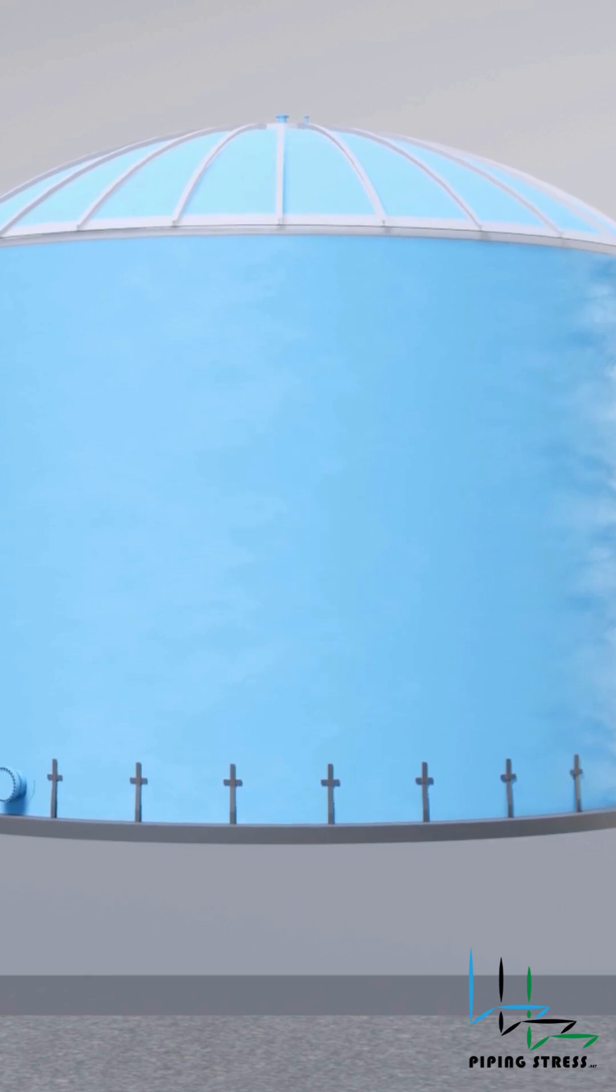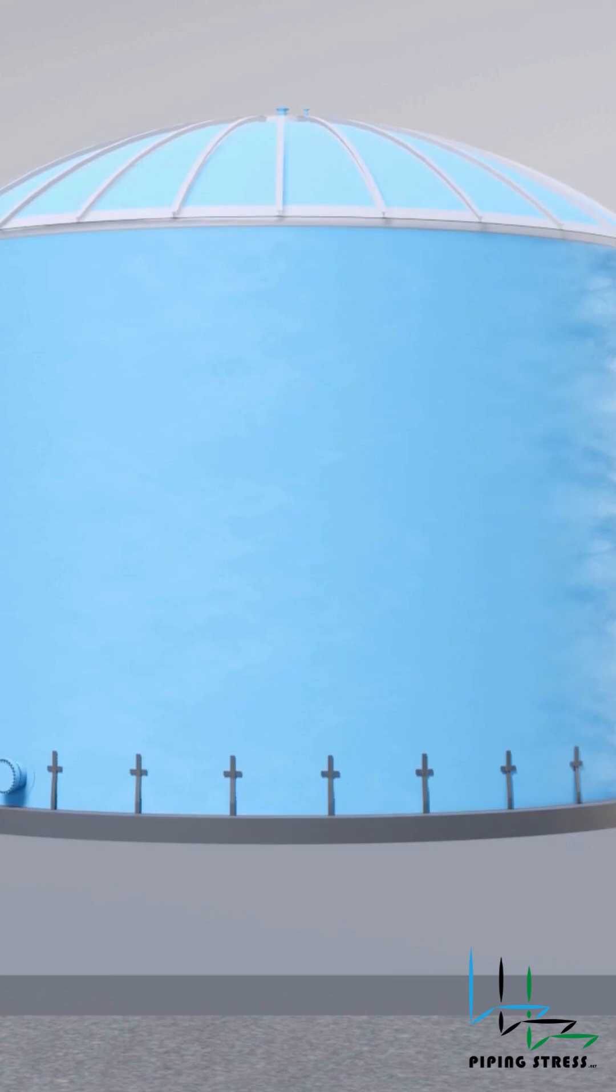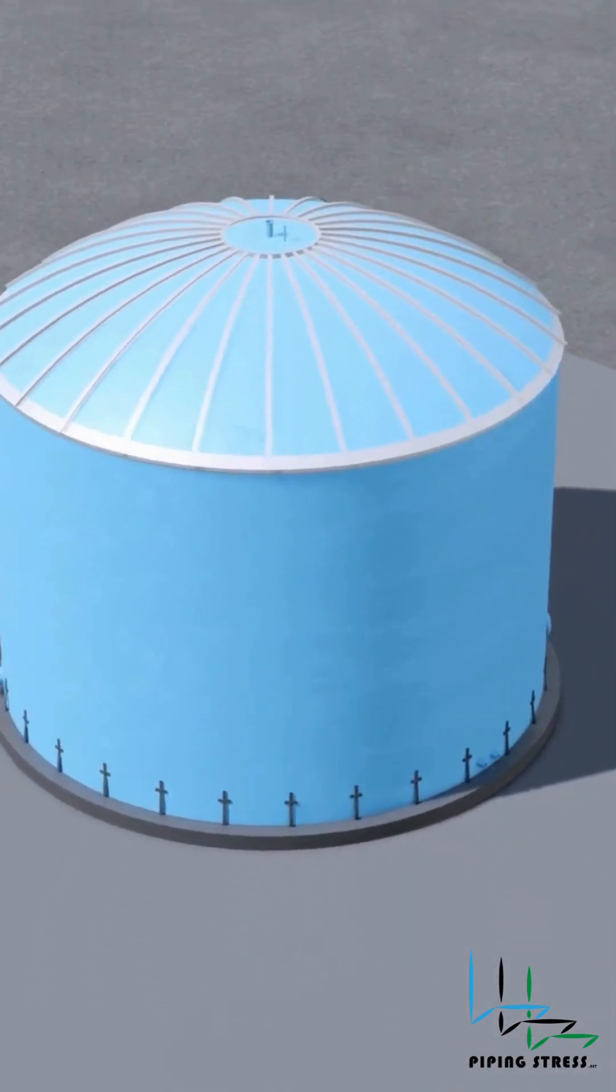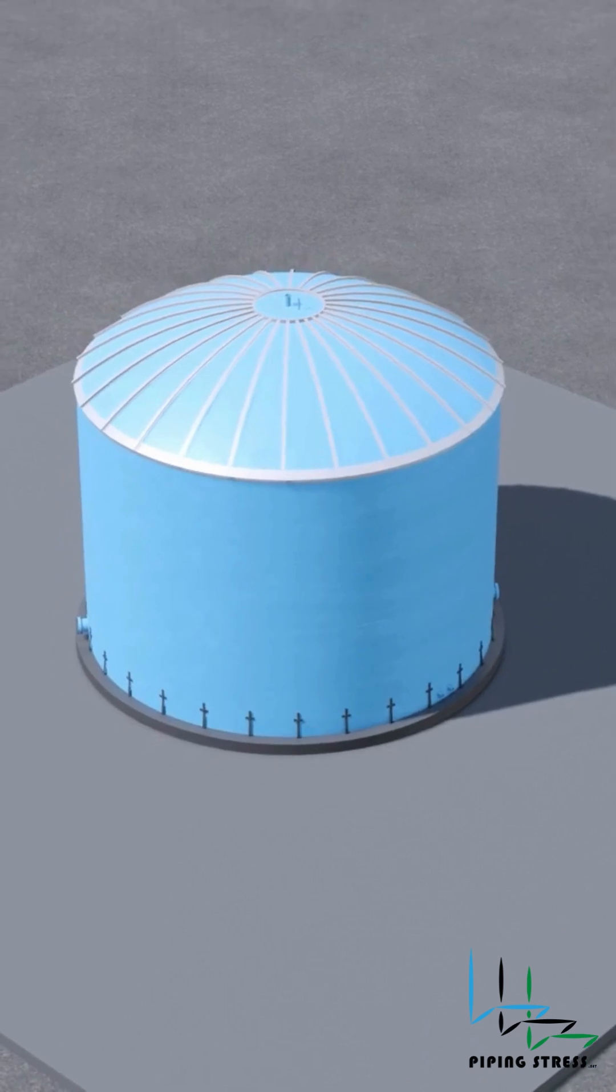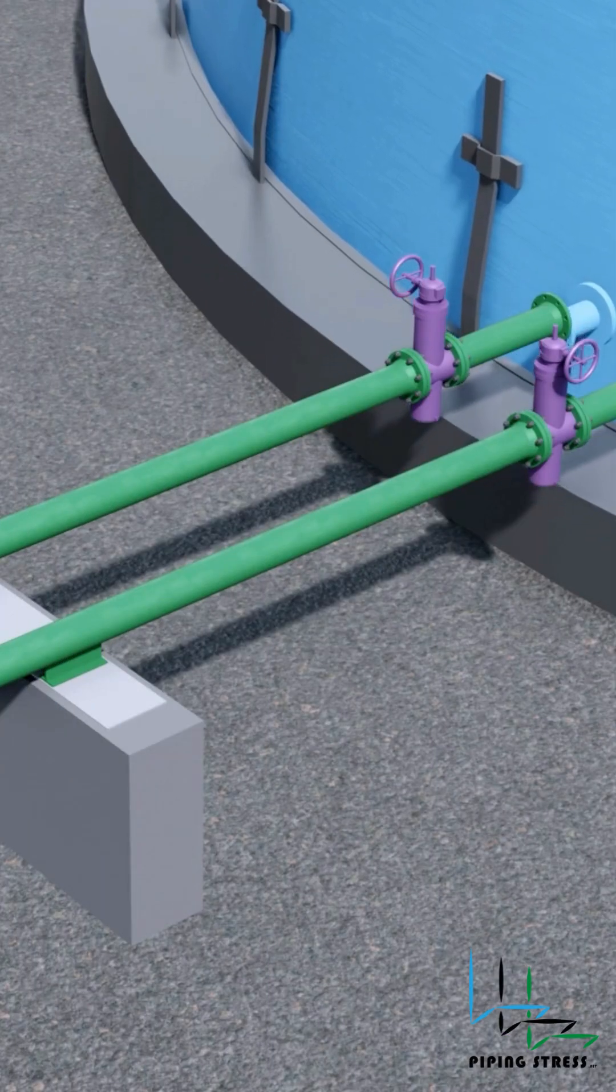During the hydrotest operation, one-third of the settlement occurs while the rest happens throughout the tank's lifespan. Due to this, the piping connections must be removed during the storage tank hydrotest operation.